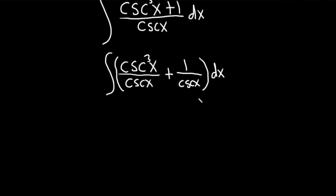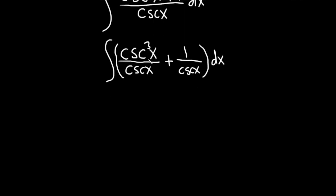Okay, so now we can clean this up a little bit because cosecant cubed over cosecant, we're going to lose a copy of cosecant.